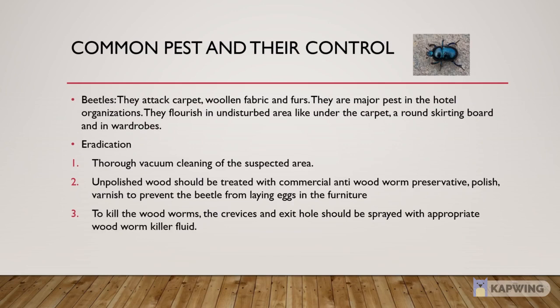The next common pest is Beetles. They attack carpet, woolen fabric and fur. They are major pests in hotel organizations. They flourish in inaccessible areas like under the carpet, around skirting boards and in wardrobes. Control methods: 1. Thorough vacuum cleaning is recommended for the suspected area. 2. Unpolished wood should be treated with commercial anti-woodworm preservative. 3. Polish and varnish unpolished wood to prevent beetles from laying eggs in furniture. 4. The crevices and exit holes should be sprayed with appropriate woodworm killer fluid.